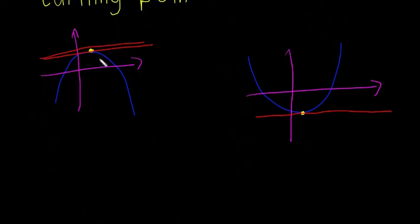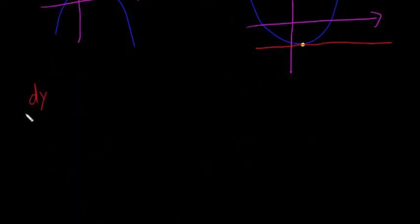that if it's flat and if it's parallel to the x-axis, then the slope is equal to zero. Okay, and the slope here again of this line is going to be equal to zero. So that means that dy dx is going to be equal to zero.